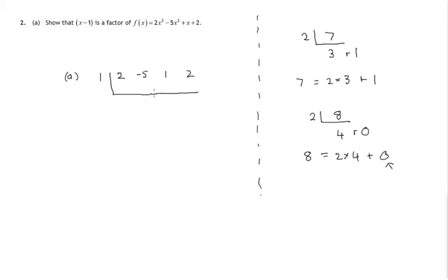That's the division set up. Let's do the procedure. Bring down the 2. 2 times 1 is 2. Add these two numbers. Negative 3 times 1 is negative 3. Add these two numbers. Negative 2 times 1 is negative 2. Add these two numbers.